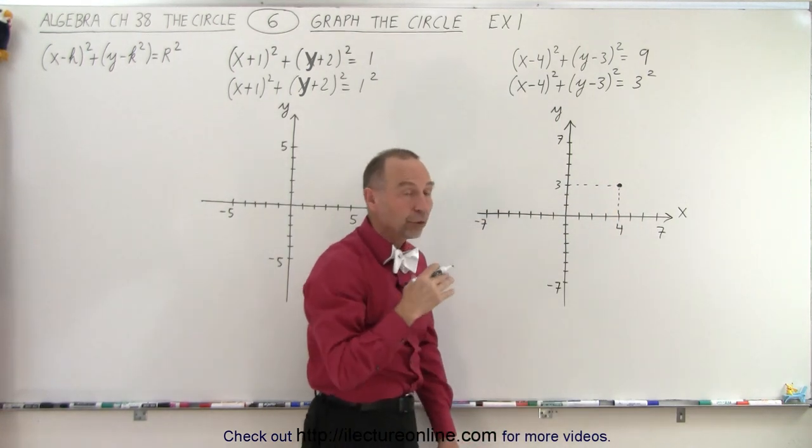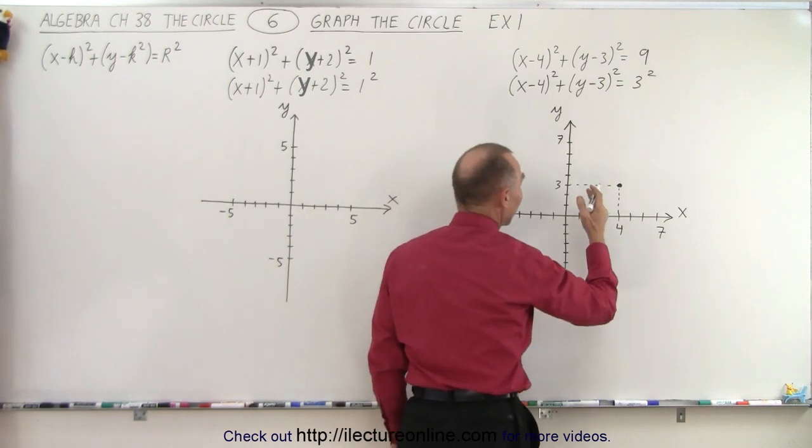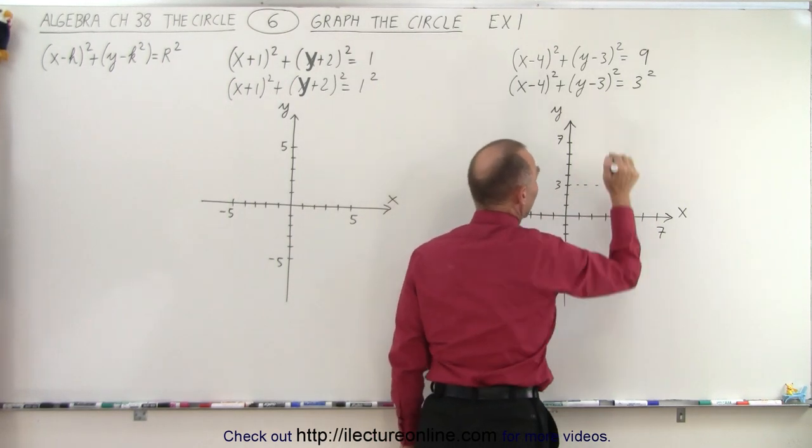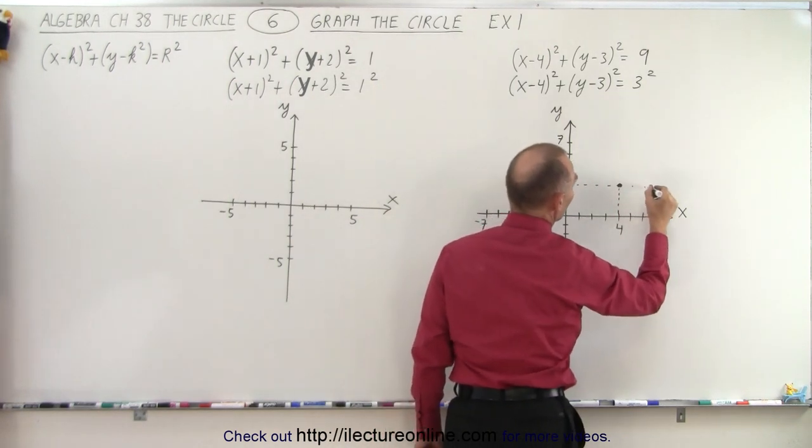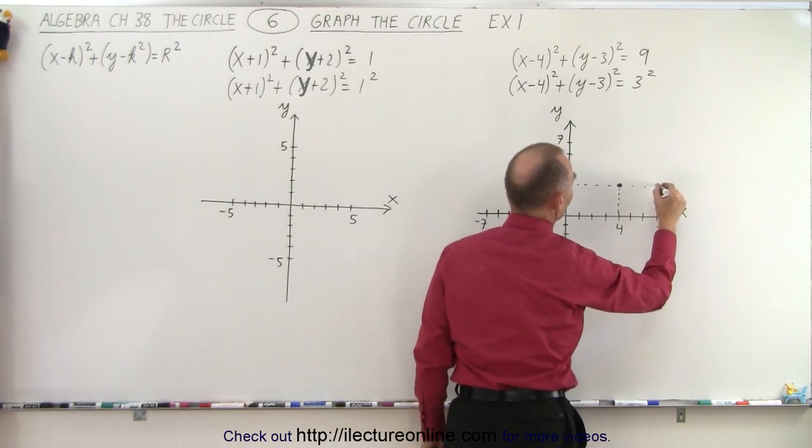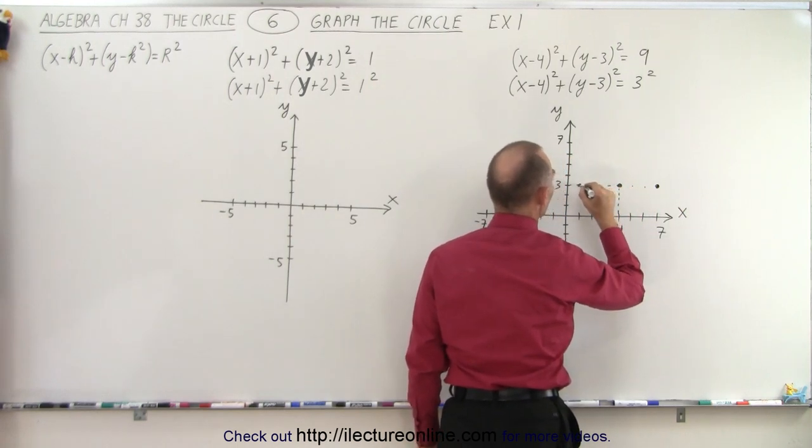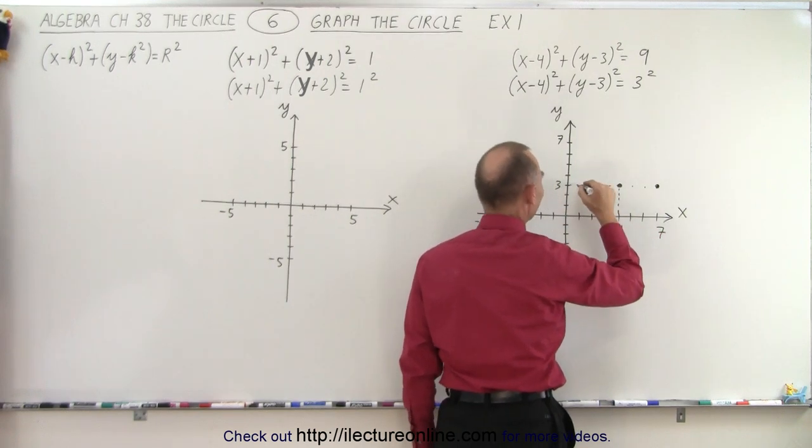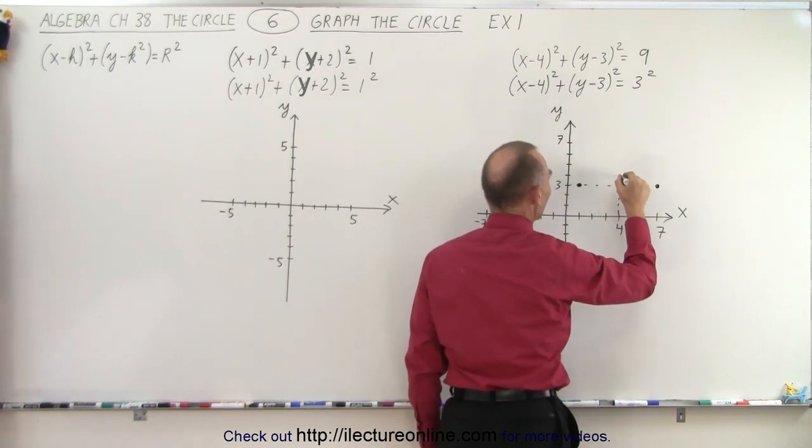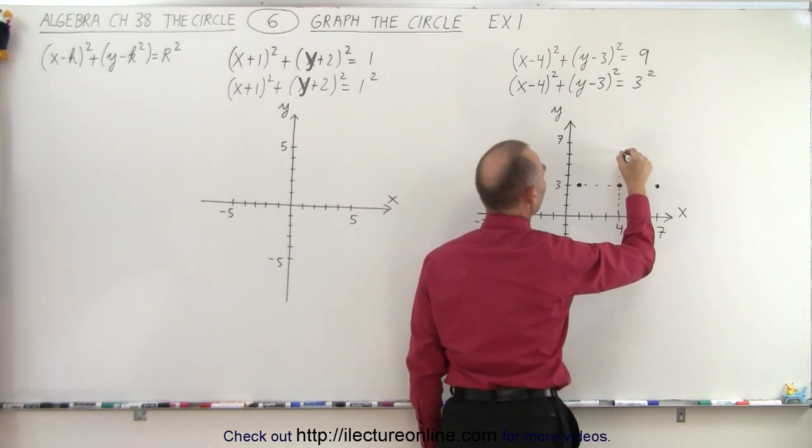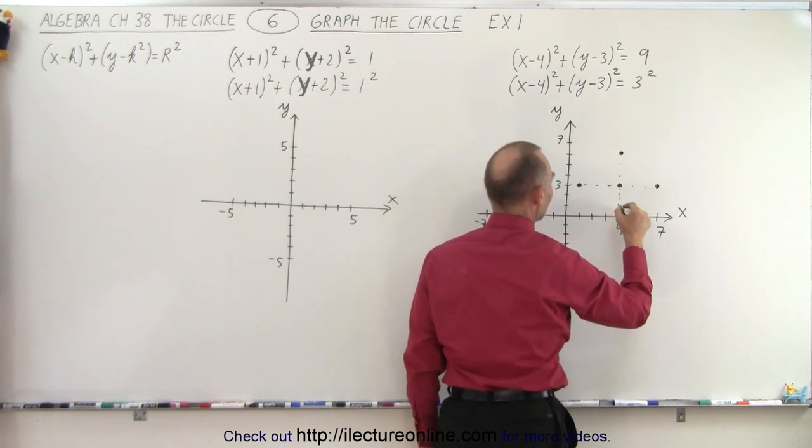And now from the center you're going to move a distance to the right, to the left, up or down equal to the radius. So we move 1, 2, 3 spots to the left. We move 1, 2, 3 spots to the right. Then we move 3 spots up 1, 2, 3 and 3 spots down 1, 2, 3.